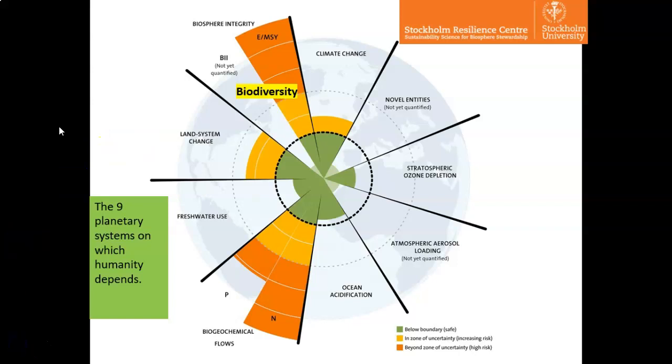The bottom line is that biodiversity is one of the systems important to sustaining humanity, and we are redlining this one — way into the danger zone in terms of extinctions caused and the fact that so many populations are now down to small sizes. This all ties to the concept of ecosystem services: the things that ecosystems do for us for free.